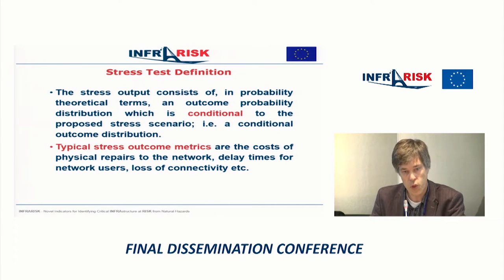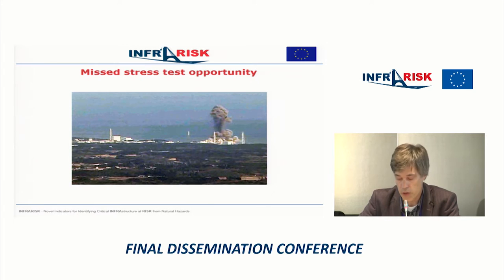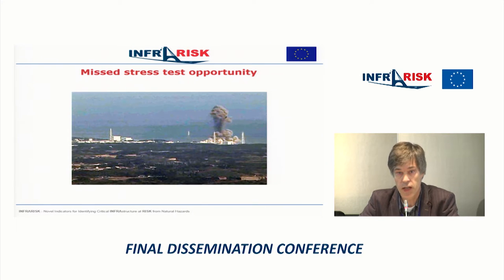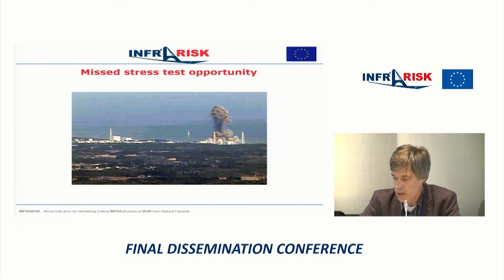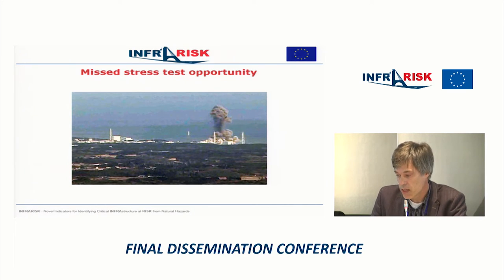The well-known example of a missed stress test opportunity is the Fukushima disaster, where an extreme earthquake occurred with a magnitude 9, never observed before. But the resulting tsunami had happened already 14 times over the past 500 years. The wave run-up was more than 10 meters, whereas the flood defenses designed to protect the nuclear power plant against tsunami was only 5.7 meters. Had the civil engineers applied a stress test on the adverse scenario of a tsunami with a run-up of more than 10 meters, maybe this accident wouldn't have happened.